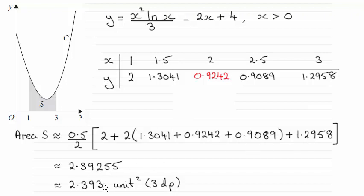So there we go. The answer then, 2.393 units squared to 3 decimal places.